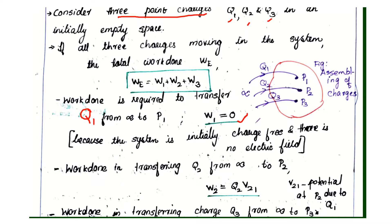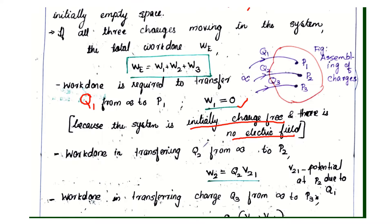First case: the work done to bring Q1 from infinity to point P1 is zero. Because the system is initially charge-free, there is no electric field. Therefore, work done W1 is equal to zero.